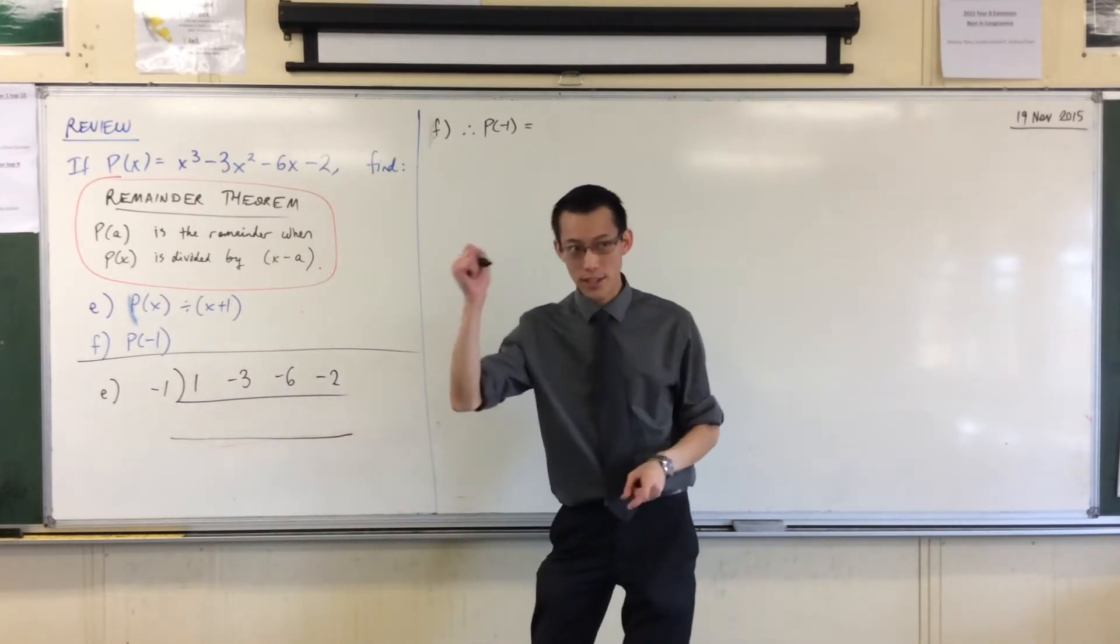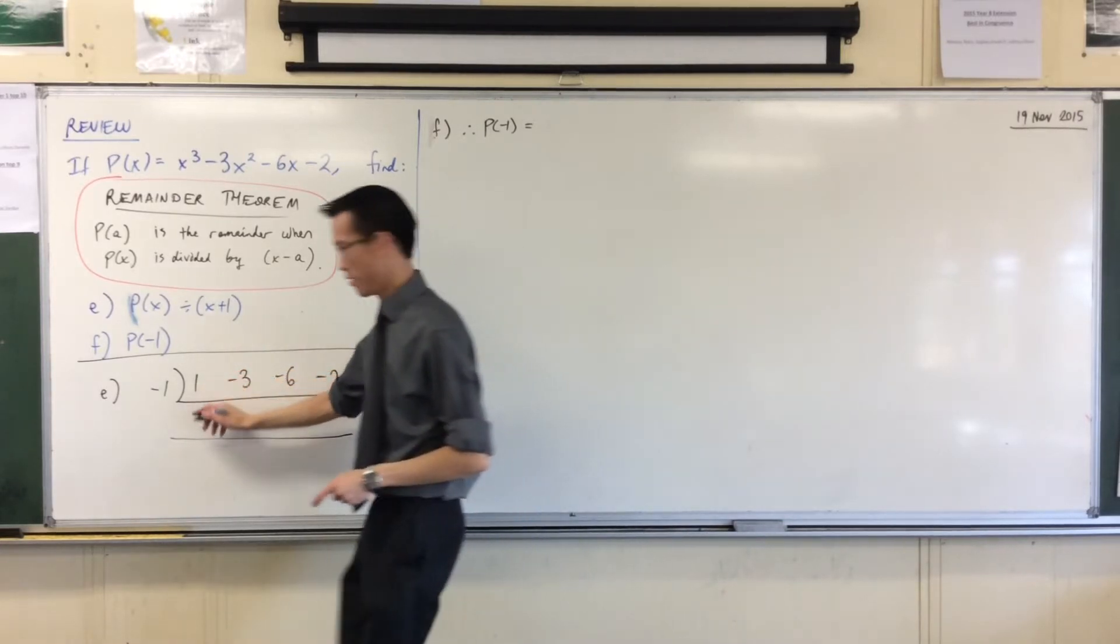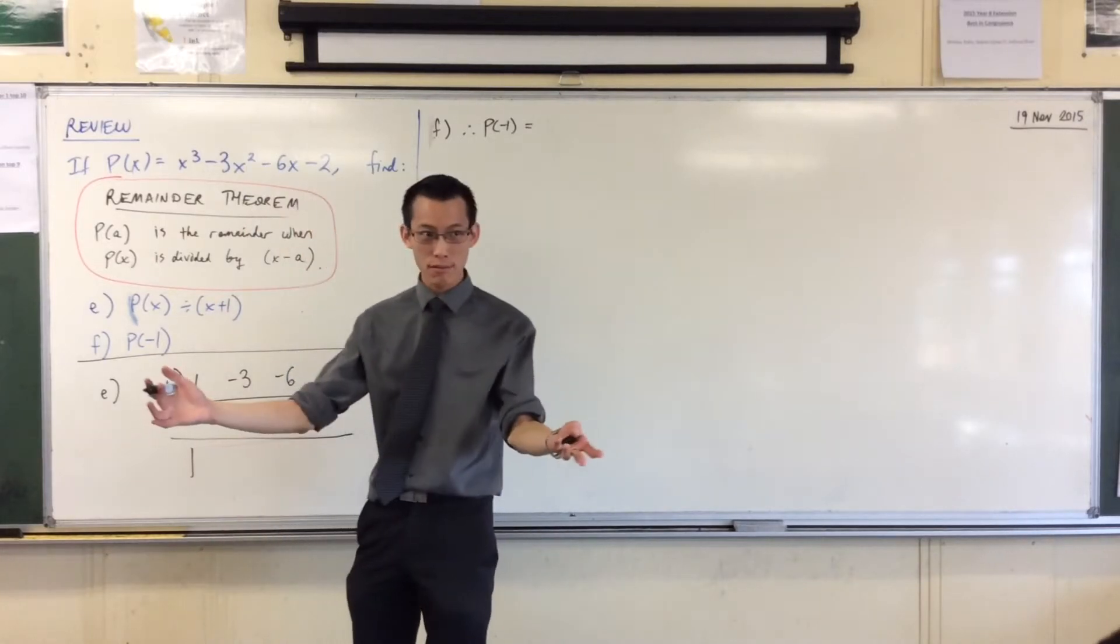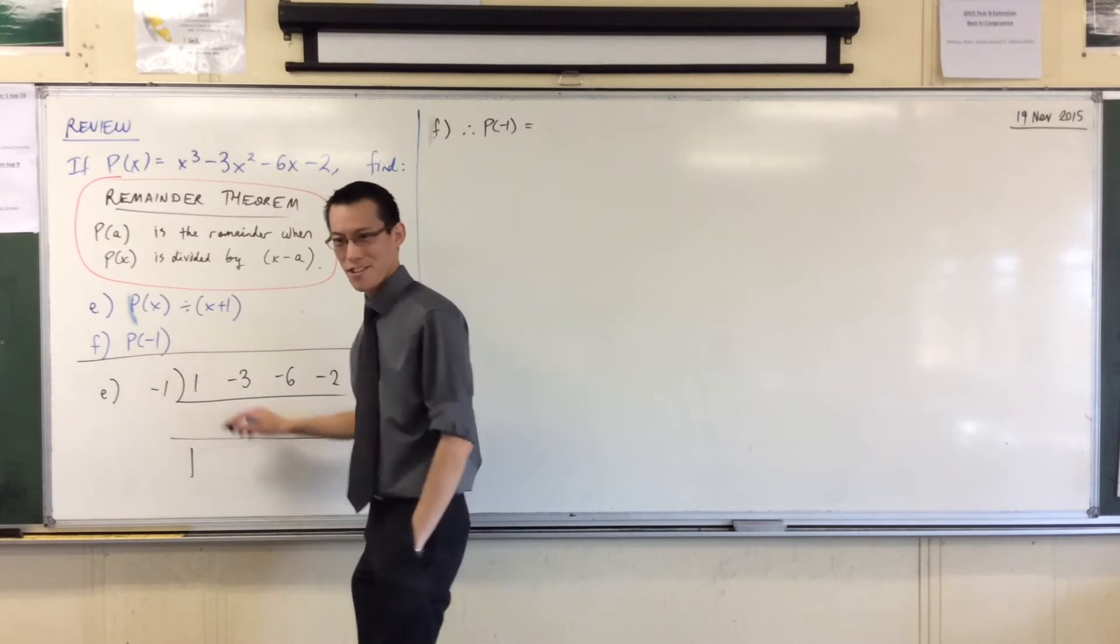Let's give this a go. First step synthetic division: I just take that leading coefficient and I just write it down. That's all you need to do. And then I'm going to multiply add, multiply add. You ready? Blink and you'll miss it.